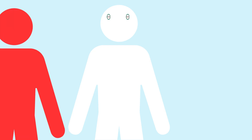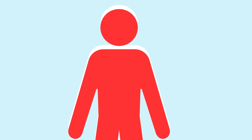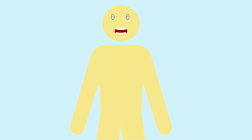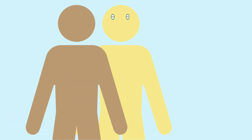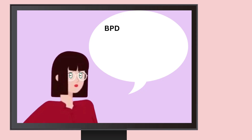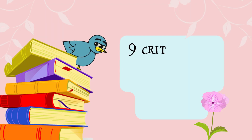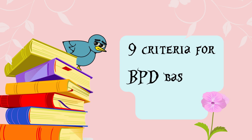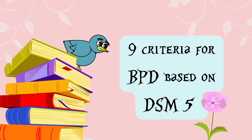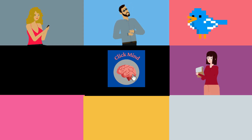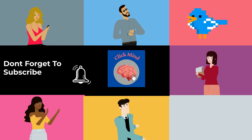Borderline Personality Disorder is an emotionally unstable personality disorder. This often costs them dearly in interpersonal relationships and can lead to hurting themselves. BPD can be hard to diagnose because it often overlaps with other mental disorders. In this video, we will shed light on the criteria for BPD based on the DSM-5. This video is for educational purposes only — please don't use this for self-diagnosis or labeling others.